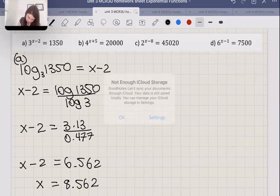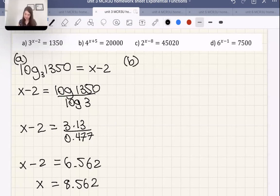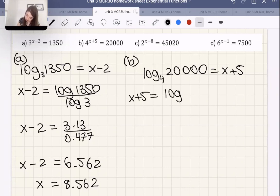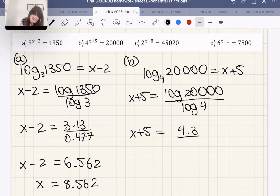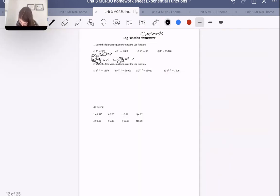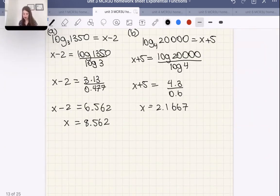Let's try this one, b. So log with the base 4, the x 20,000 equals to x plus 5. So therefore, x plus 5 is equal to log 20,000 over log 4. So therefore, x would be 2.1667. And is that what they got? 2.17. Yep, they just rounded to 2 decimal places, and I rounded to 4. Very good. Very, very good.